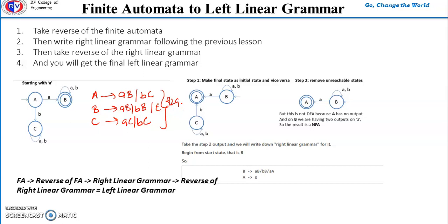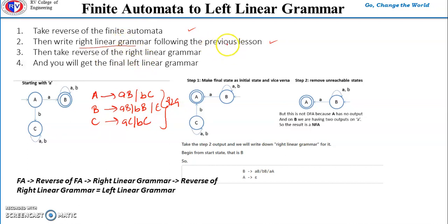For left linear grammar, what we have to do with the given finite automata: first, we need to take the reverse of the finite automata — that is step one. Then in step two, we write the right linear grammar for that reversed automata using the same procedure. In step three, we reverse the right linear grammar, and that gives us the final left linear grammar.